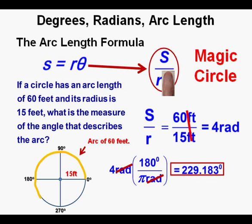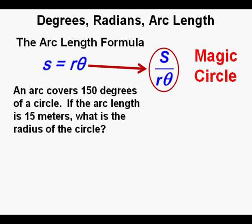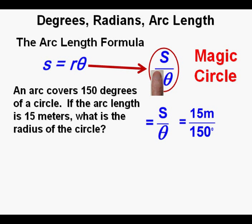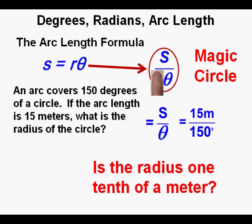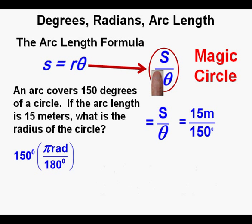That angle looks about right, so we box in the answer as correct. Now a problem where we know the arc length and the angle and need the radius: an arc covers 150 degrees of a circle and the arc length is 15 meters — what is the radius? We cover r in the magic circle, giving radius equals s over theta. That's 15 meters divided by 150 degrees — but we must convert to radians first.